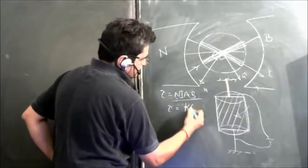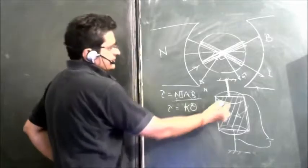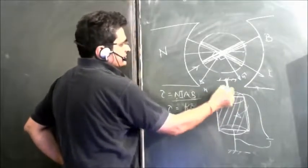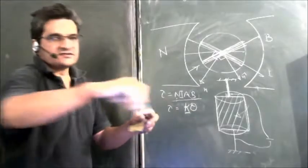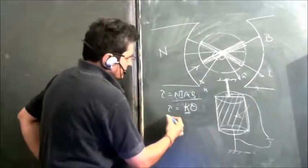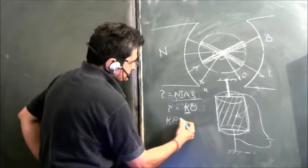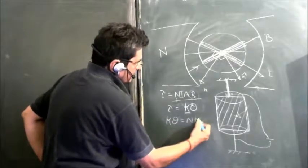The torque on the strip will be equal to k times theta, where theta is the angle rotated by the strip and k is the constant which has tendency to bring it back.